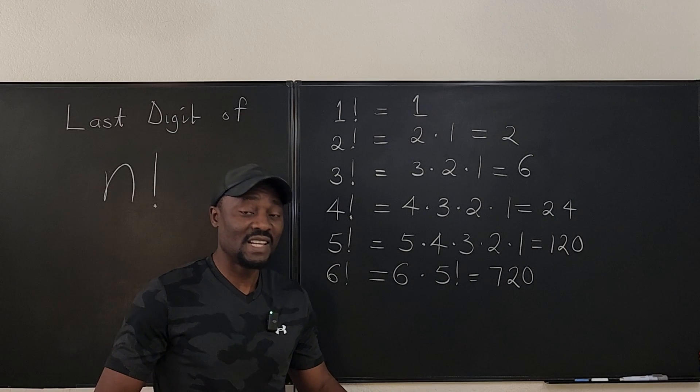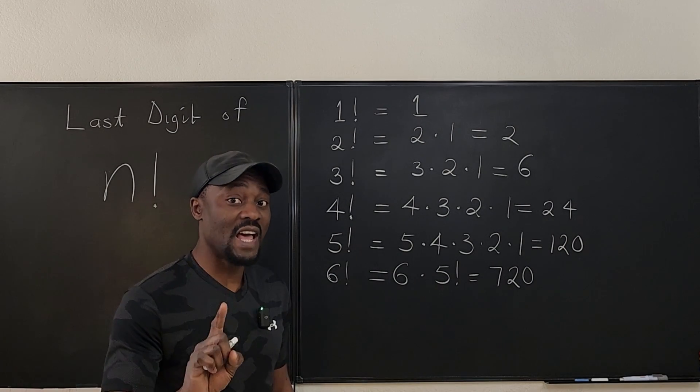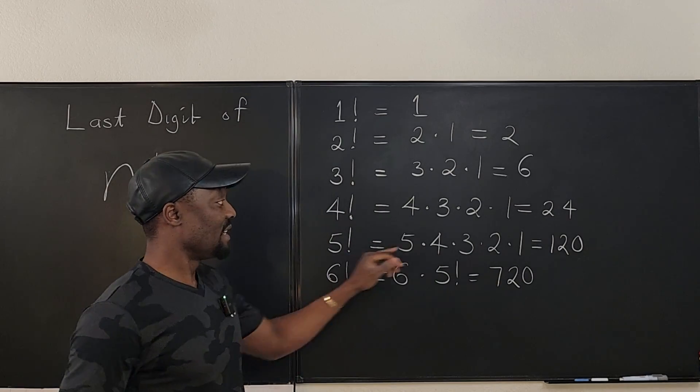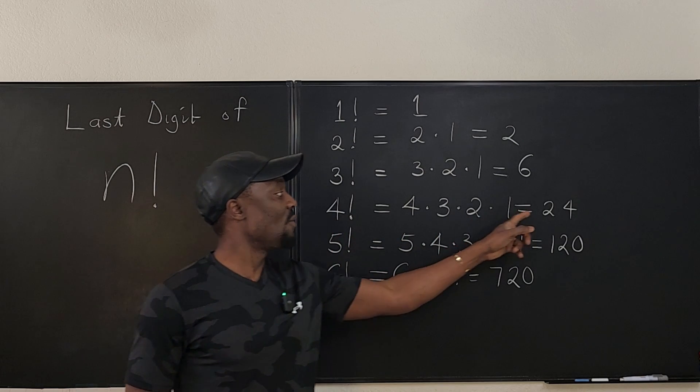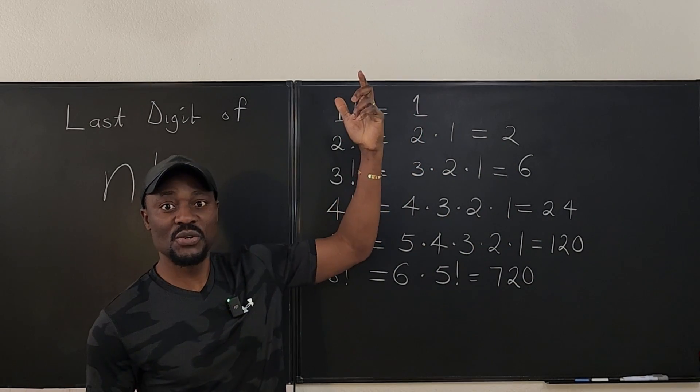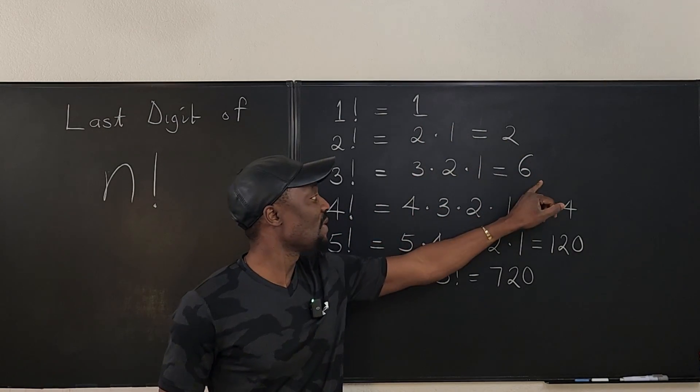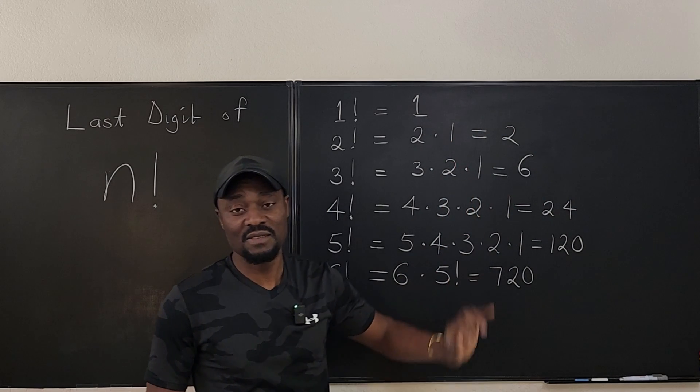So generally, the last digit of any factorial is zero, unless the factorial or the number or n is less than five. If it is less than five, then you're going to get one of these numbers that you can easily compute. We know zero factorial is one, one factorial is one, two factorial is two, three factorial is six, and four factorial is 24, and you can easily find the last digit.